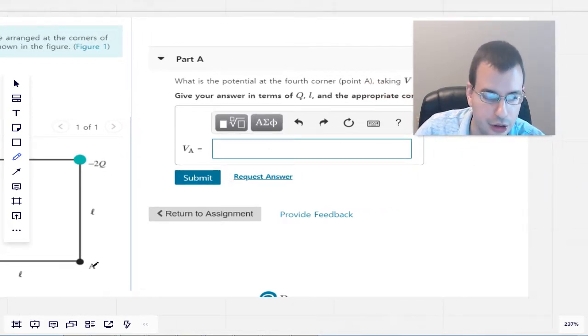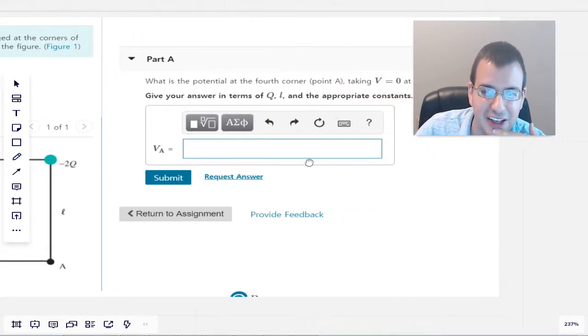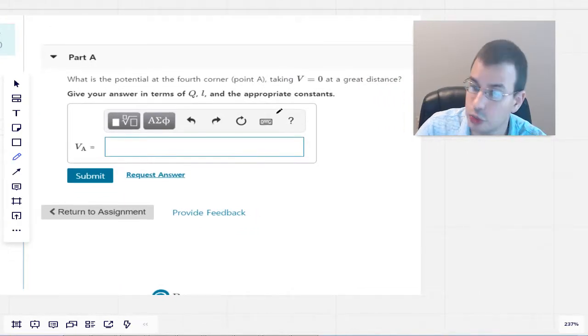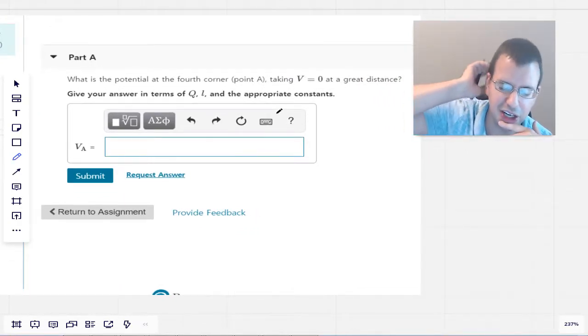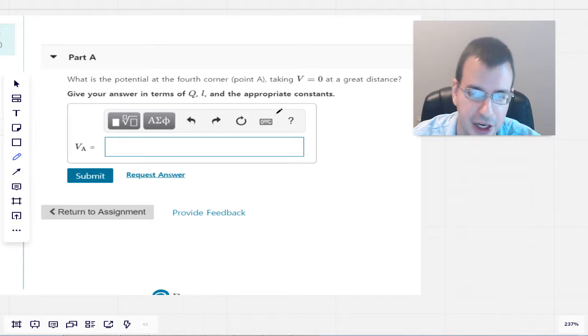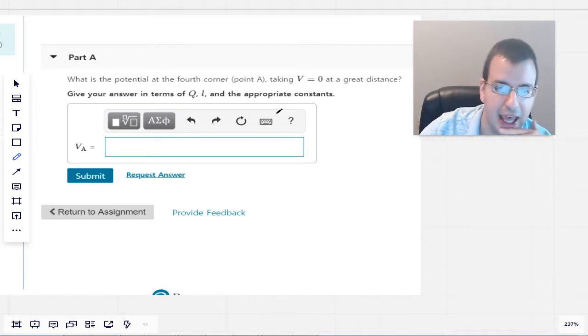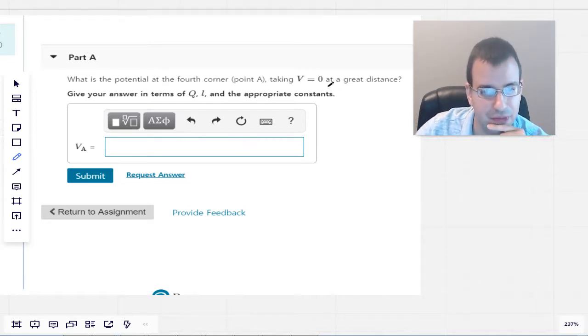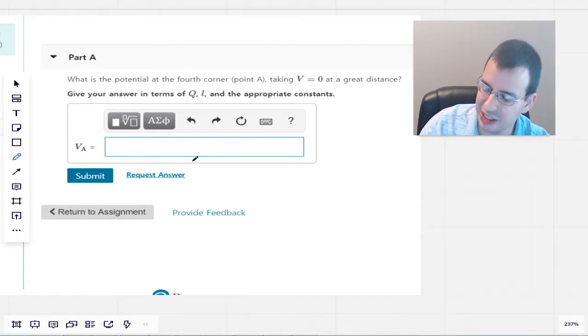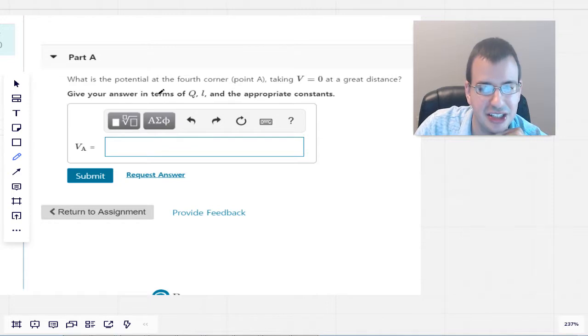What is the potential at the fourth corner, point A, taking V equals 0 at a great distance, which is pretty standard, electric potential equals 0 at infinity, though it doesn't necessarily have to. It's the convention that's normally done and makes life easier. They don't like to say infinity because infinity doesn't technically exist. And so great distance is an approximation of forever.